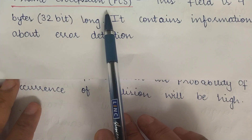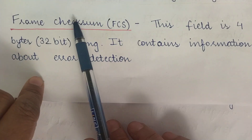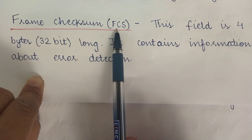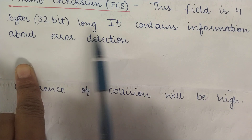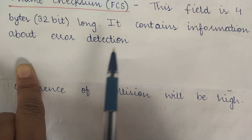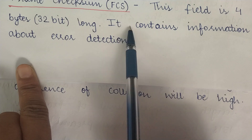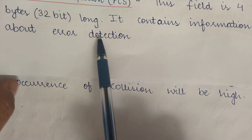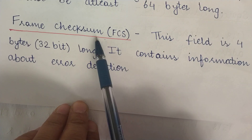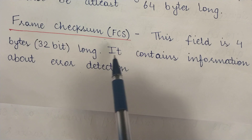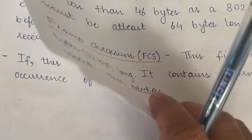The eighth and last field is the frame checksum (FCS), which is 4 bytes (32 bits) long. It contains information used for error detection. Using the FCS, the receiver can detect errors in the transmitted bits — identifying if bits were altered during transmission. This is the last field of the Ethernet frame format.